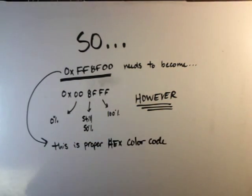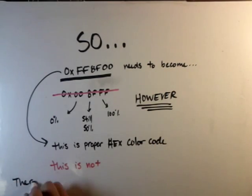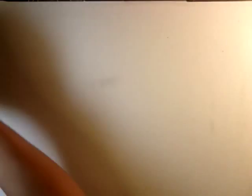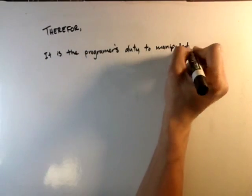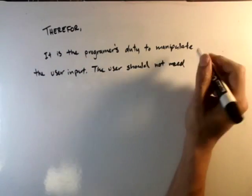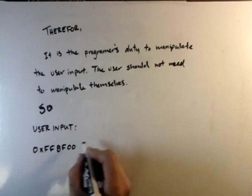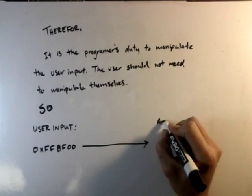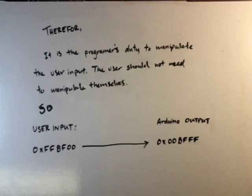Lastly, I'd like to state that it is the programmer's job to display exactly what the user expects. This may seem obvious, but I believe a few programmers kind of miss that mark. In this case, we're taking a certain input that is being changed to something completely different internally, but it is outputted as the user would expect.